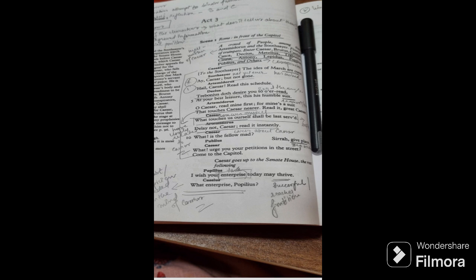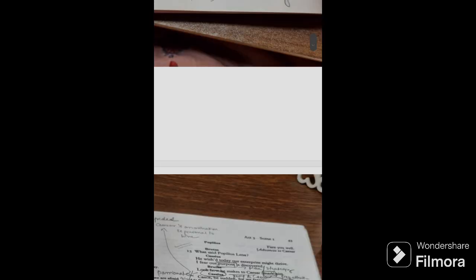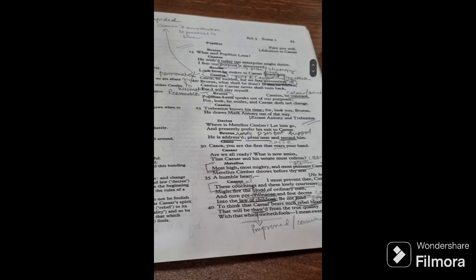Caesar goes up to the Senate House, the rest following. Popilius, I wish your enterprise today may thrive. Now Popilius is saying, I wish your enterprise may thrive. Enterprise means task, venture, whatever you wish to do, it becomes successful. It reaches fruition. What enterprise, Popilius? Now what is happening here is Cassius again feels, because they are about to assassinate Julius Caesar, so sense of doubt comes into, seeps into the mind of Cassius. Cassius feels that what is he talking about? Does he know about the plan? Has my plan been discovered?